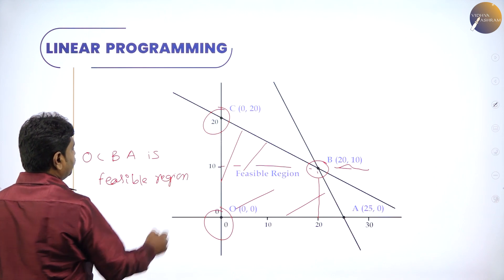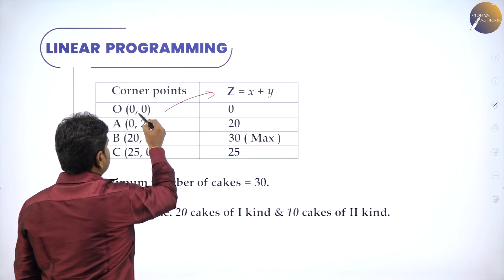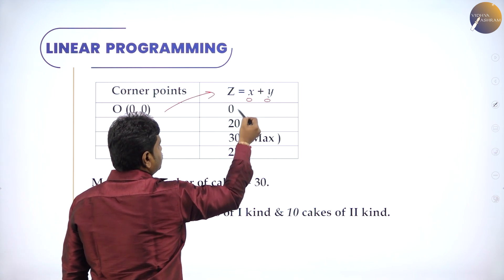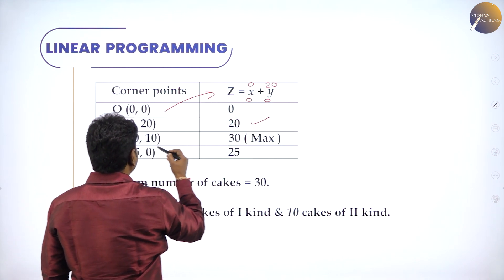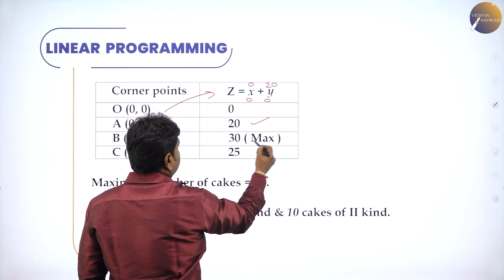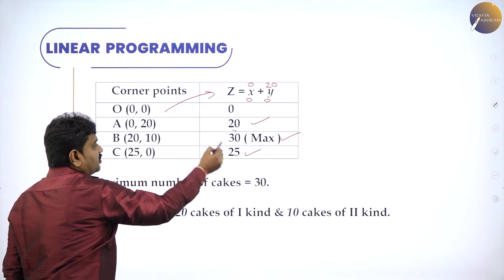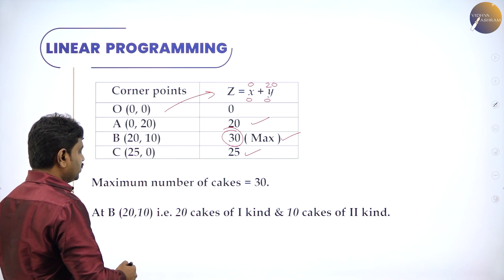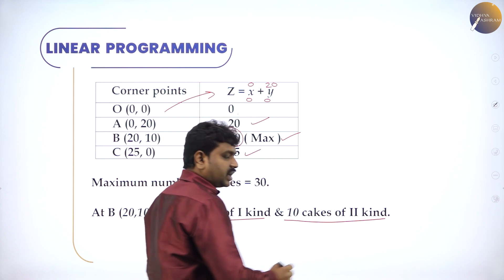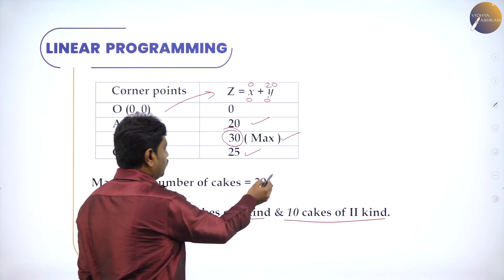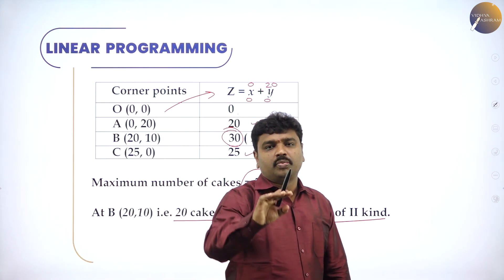The feasible region is O, C, P, B. Once you get the feasible region, write the corner points in a corner point table. Substitute: O(0,0) gives z = 0; C(0,20) gives z = 20; P(20,10) gives z = 30; B(25,0) gives z = 25. The maximum value is 30, occurring at (20, 10). Therefore, 20 cakes of kind 1 and 10 cakes of kind 2 are prepared to get the maximum number of cakes of 30.